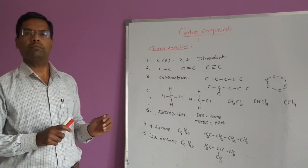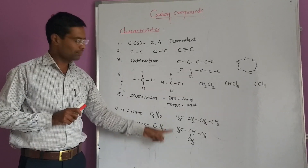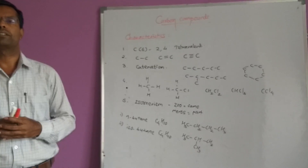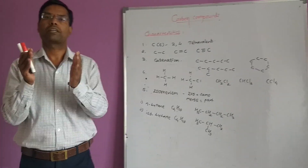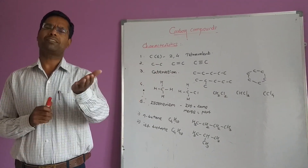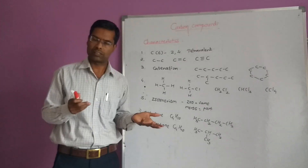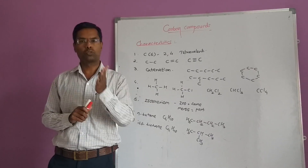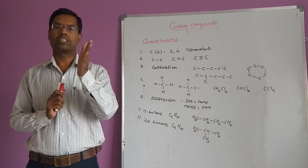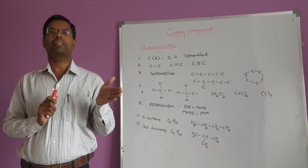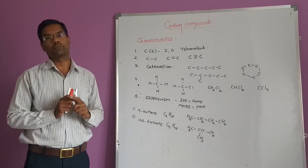What is isomerism? The compounds having the same molecular formula but different structural formulae — this property is called isomerism. Carbon shows the characteristic of isomerism. A very simple example: glucose and fructose both have the same molecular formula C6H12O6, but they are isomers of each other. Sucrose, maltose, and lactose are disaccharides with the formula C12H22O11 — they have the same molecular formula but different structural formulae. So this is the very important property of isomerism.